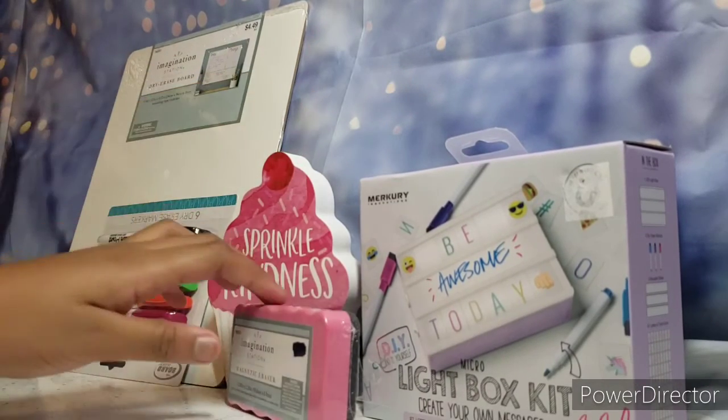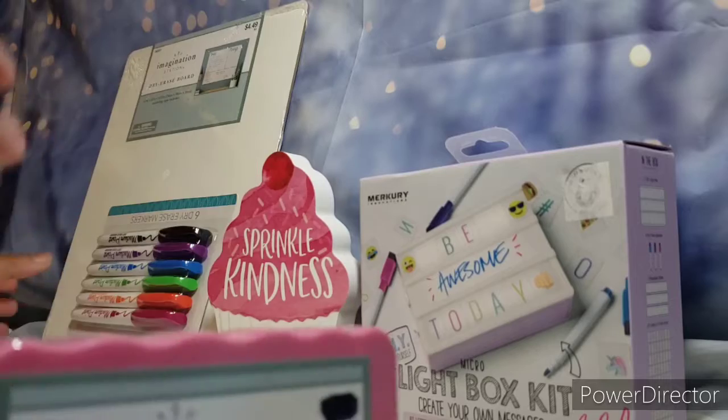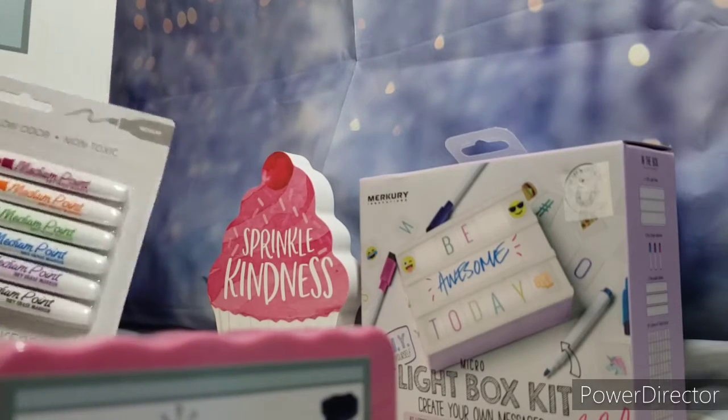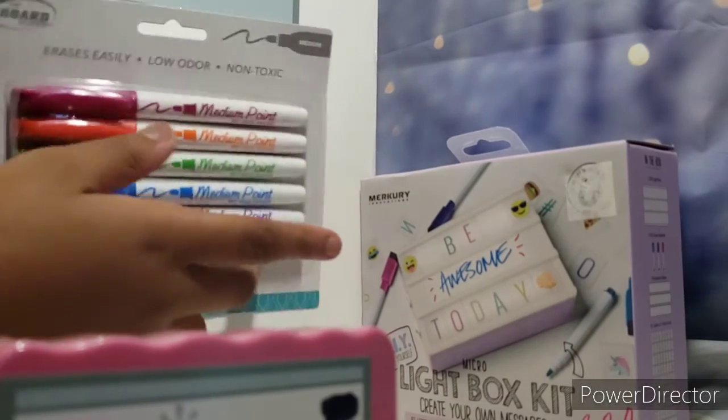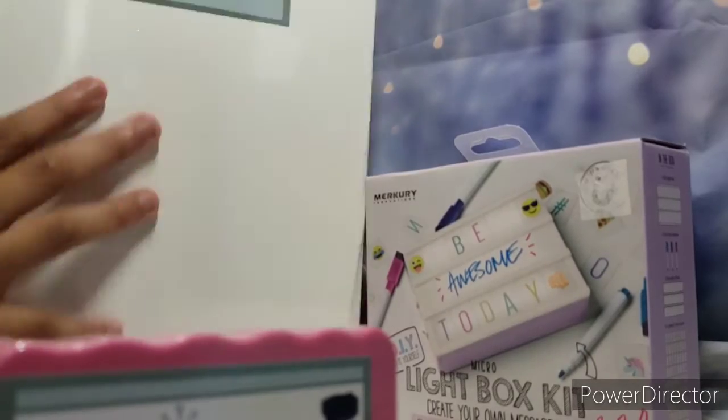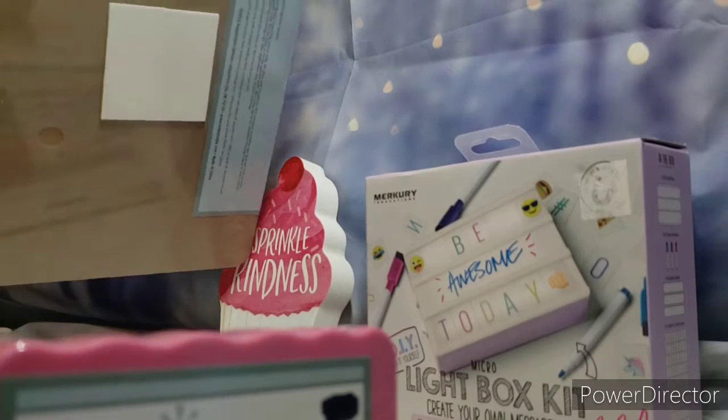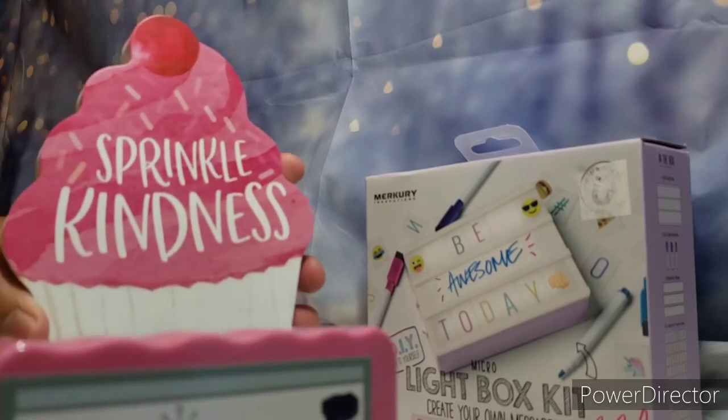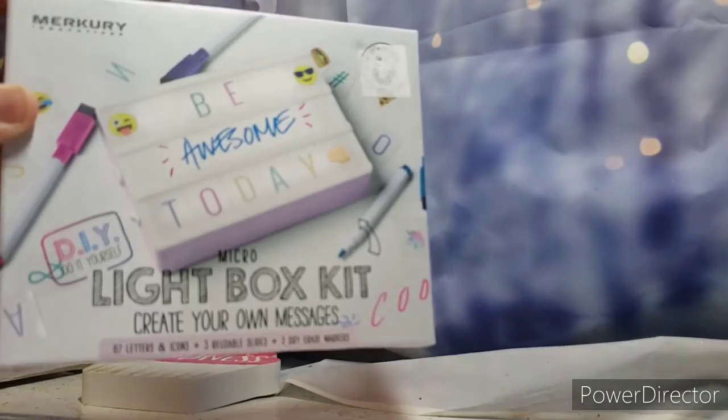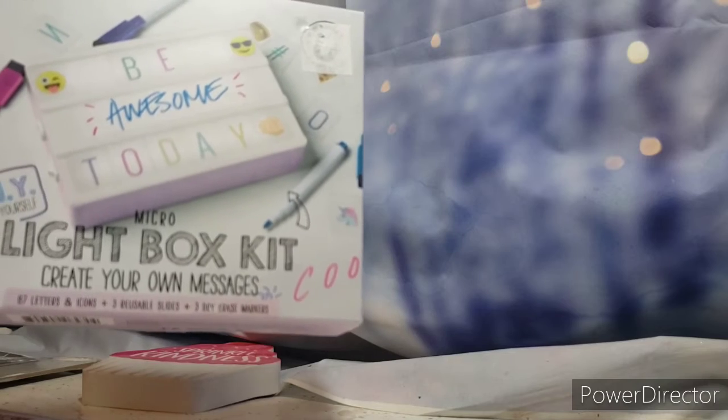Here we have an eraser and some dry erase markers in almost every color of the rainbow. We have a huge dry erase board that's awesome and it has a sticky thing on the back so we can hang it up somewhere. We have this little cupcake that says sprinkle kindness. And then the thing I'm so excited for is this micro light box. It says create your own messages, comes with 87 letters and icons, three reusable slides, and three dry erase markers.